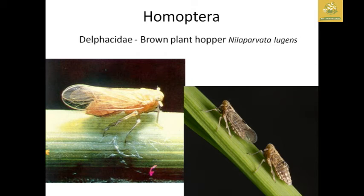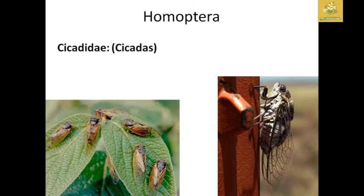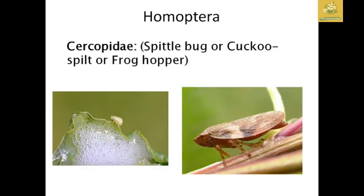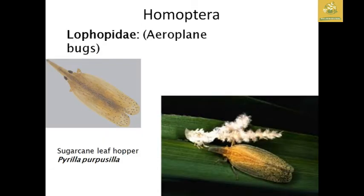Delphacidae includes the brown planthopper, an important vector of tungro virus in rice. Cicadidae is composed only of cicada insects. Membracidae includes tree hoppers or thorn bugs. Cercopidae includes spittle bugs, also known as frog hoppers. Lophopidae includes aeroplane bugs — an important pest of sugarcane known as the sugarcane leaf hopper, with scientific name Pyrilla.